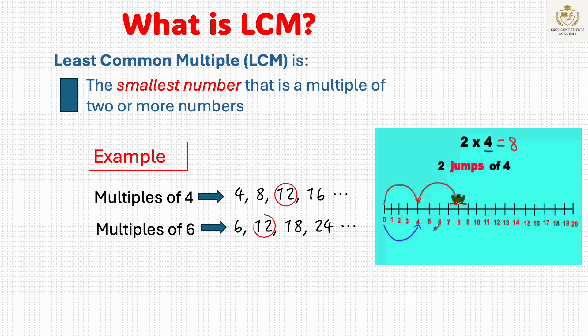The first number that appears in both lists is 12. So the LCM, which is the least common multiple of 4 and 6, is 12.